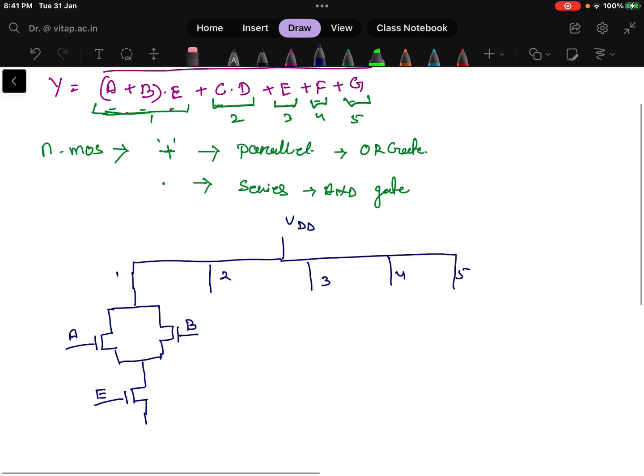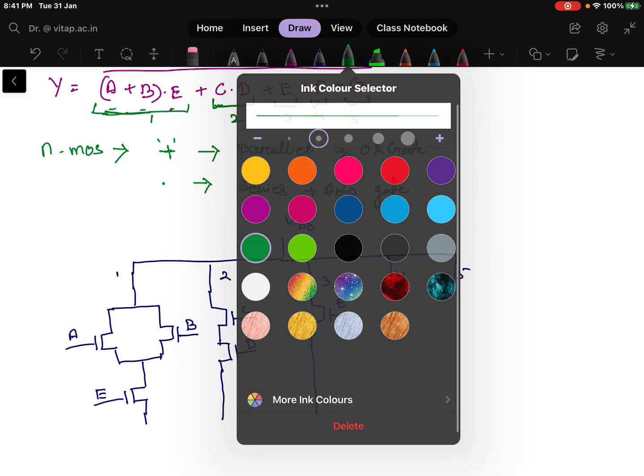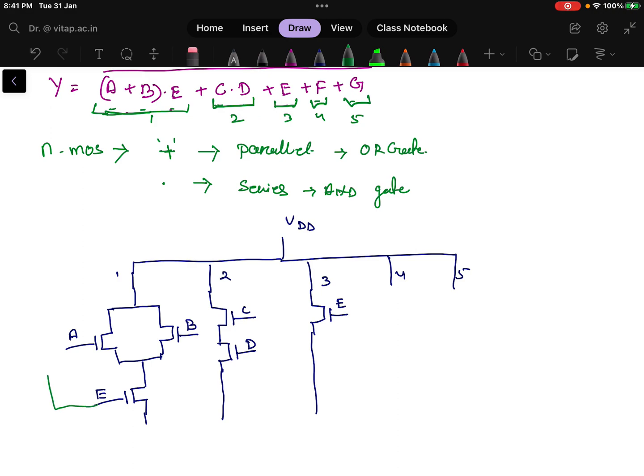The next term is C·D. There are two NMOS: one is C and another is D. C and D are in series. In the third term, there is one more gate - that is E. Now the question is, E is already used here, so either you write E again or you can draw a line which connects this E to this E, so they are internally connected.